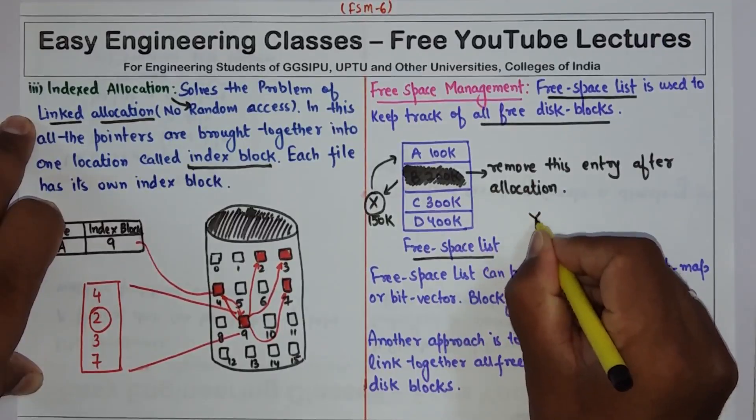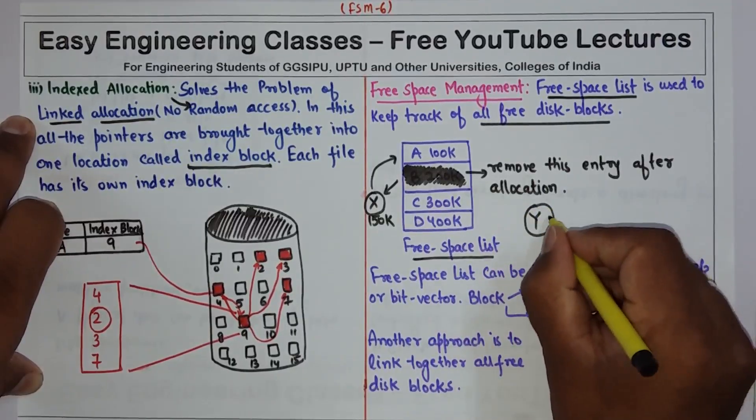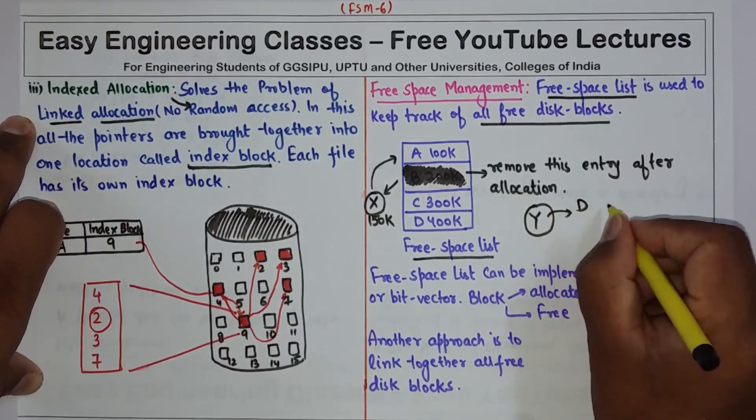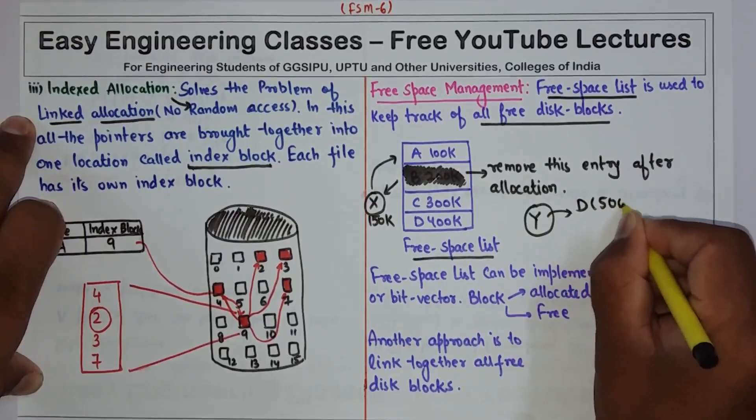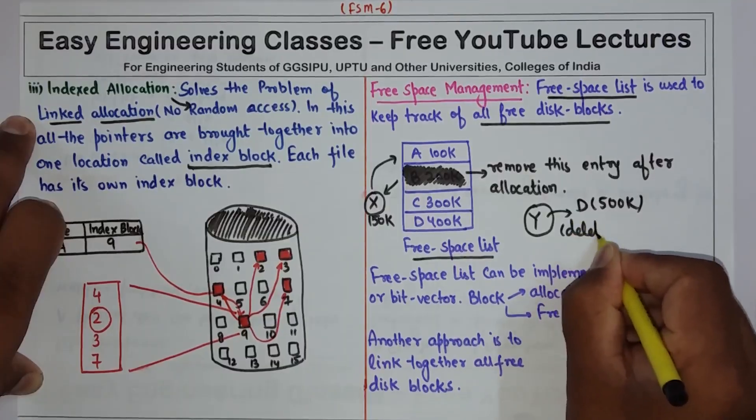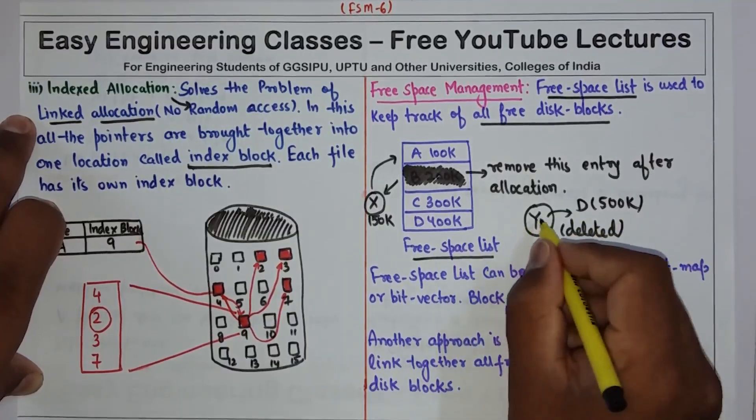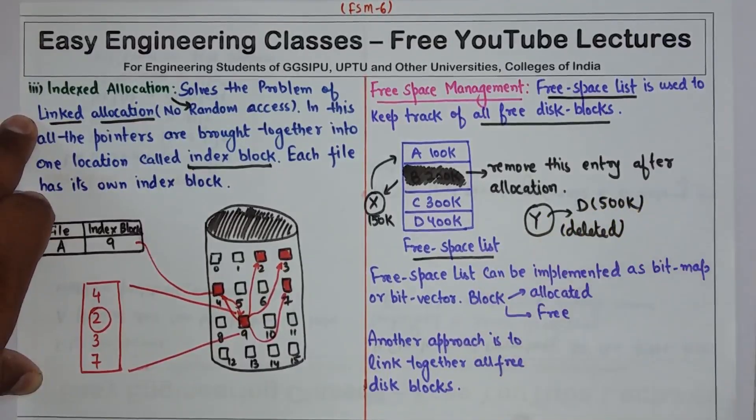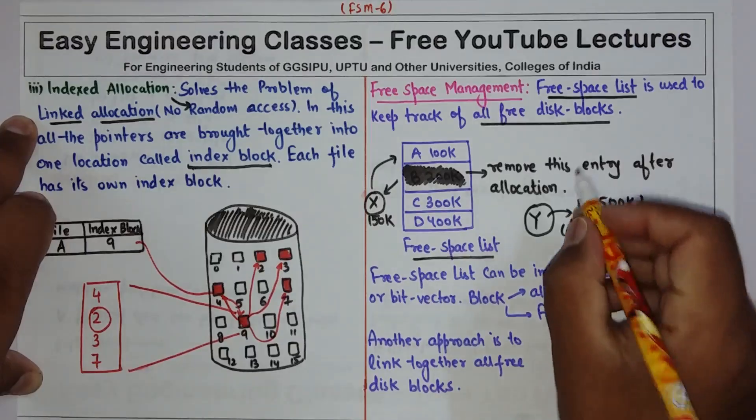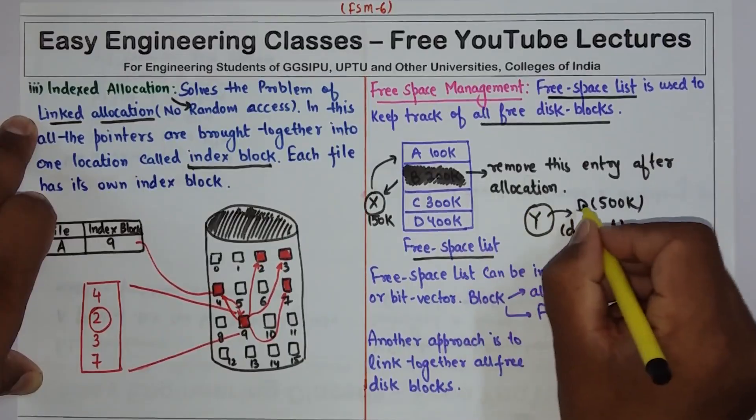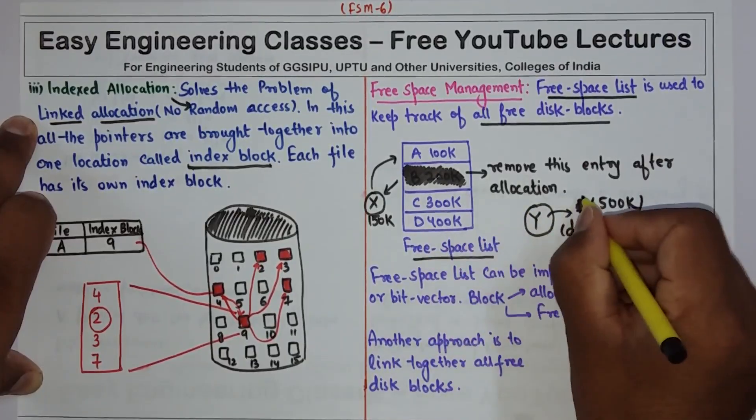Let us assume that there is also one file Y which is having a space allocation D of 500k, and this file is now deleted. The user has deleted this file. Now this space will be freed after this file is deleted.